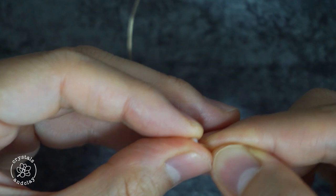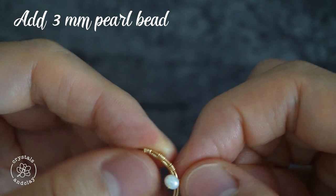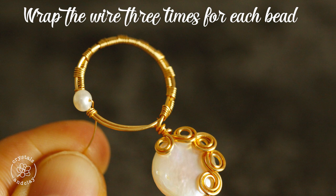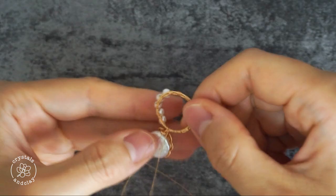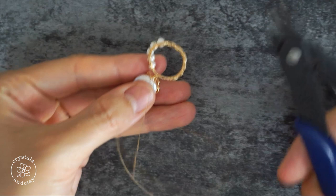We are going to embellish the unwrapped part with 3mm pearl beads. Wrap the wire 3 times after securing the bead. Continue the same process till you reach the bottom of the hoop.